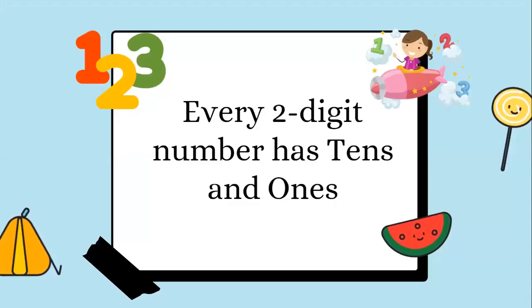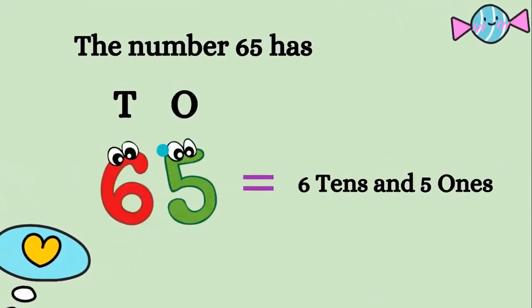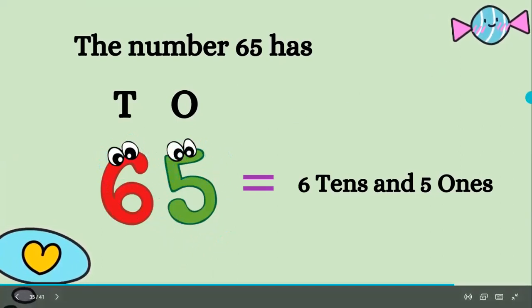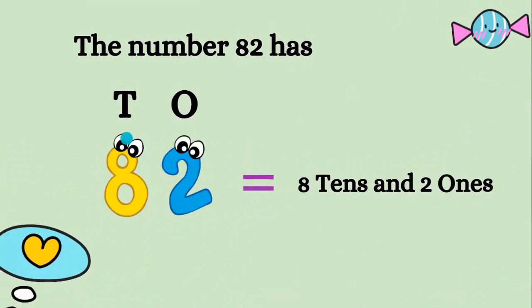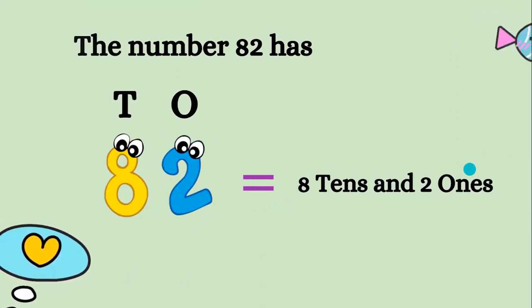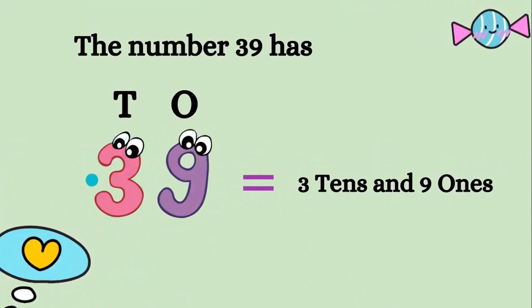Every two-digit number has tens and ones. The number sixty-five has six tens and five ones. The number eighty-two has eight tens and two ones. The number thirty-nine has three tens and nine ones.